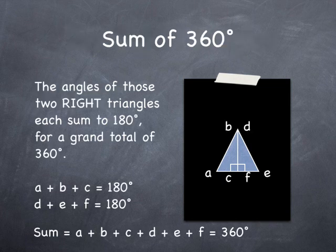Because each right triangle sums to 180 degrees, the two of them together make 360 degrees.